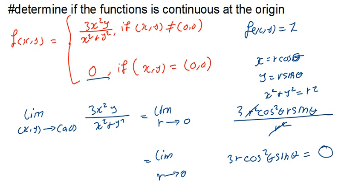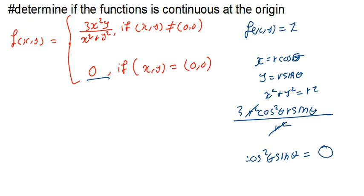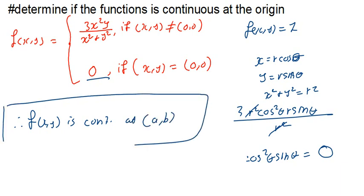When you determine continuity of a function, the fact that it's continuous at the point you're given doesn't mean it's continuous everywhere else. That's why when you make your conclusion, you don't just say 'the function is continuous' — you say 'the function is continuous at the given point.' Make sure to specify at which point it is continuous, because it might not be continuous at another point.